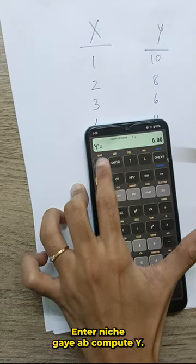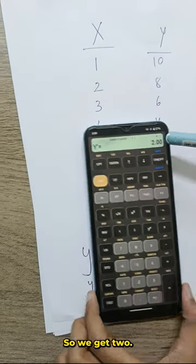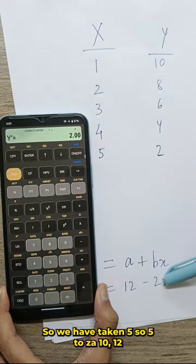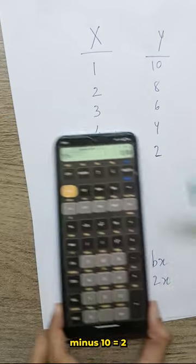It's gone down. Now, compute y. So, we get 2. We had taken 5. So, 5 times 2 is 10. 12 minus 10, 2.